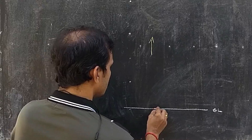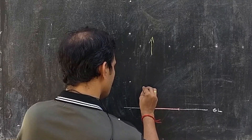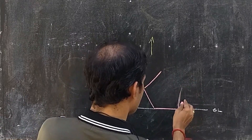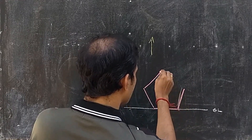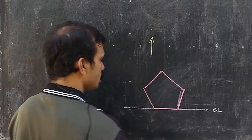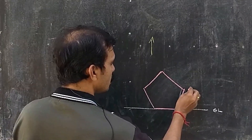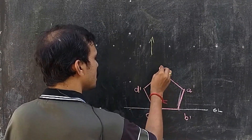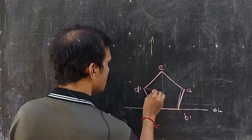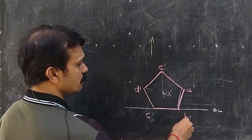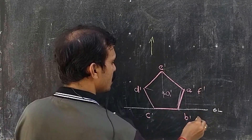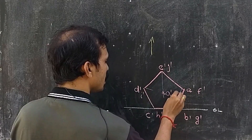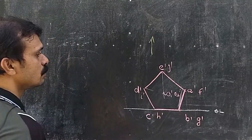The pentagon can be drawn of size 20. In the front view you can name it as A-dash, B-dash, C-dash, D-dash, and E-dash. Similarly F-dash, G-dash, H-dash, I-dash, J-dash for the other face.